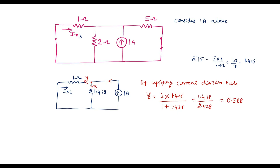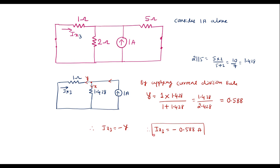Here we can see that y and Ix3 are both flowing through the 1 ohm resistor but in opposite directions. Therefore, Ix3 equals minus y, so Ix3 equals minus 0.588 amps. The current through the 1 ohm resistor considering the 1 amp source alone is minus 0.588 amps.